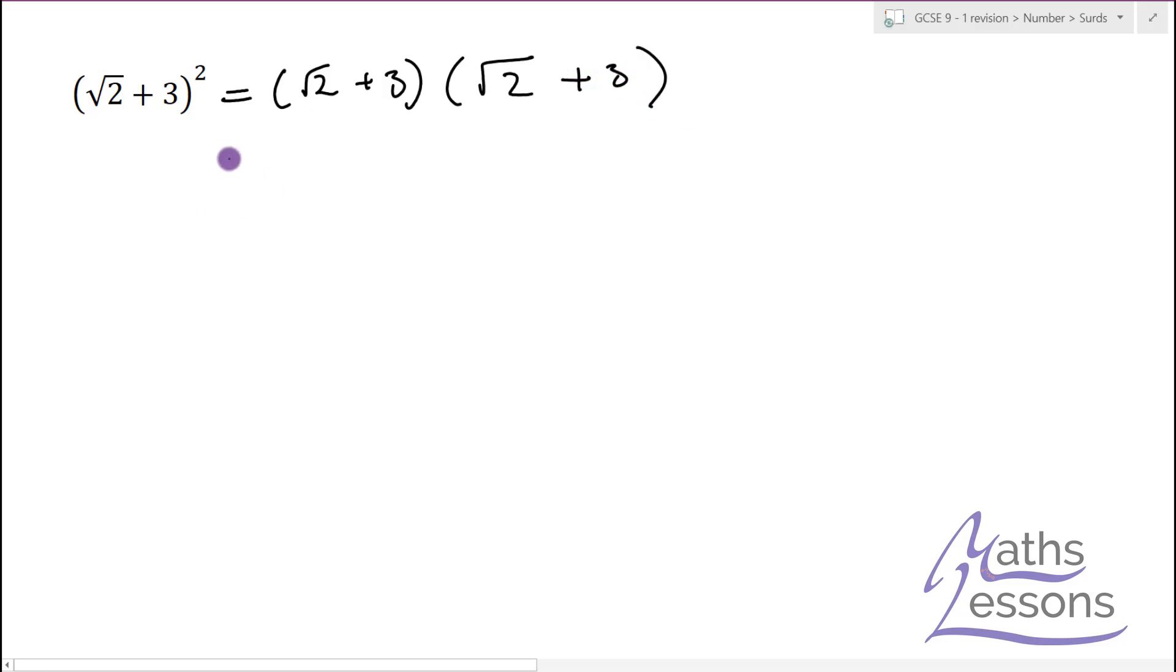Remember when you square, you times it by itself. So (√2 + 3)(√2 + 3), and we're going to do the FOIL again. So I won't write out first, outer, inner, last - I'll just say it. The first two things times together is √2 times √2. So there we go, √2 times √2.